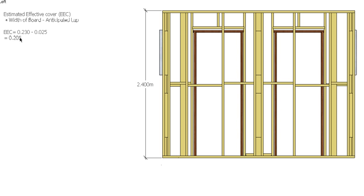So therefore my effective cover is 205mm. To work out how many boards I need in the wall, I take the height of the wall and divide that by my estimated effective cover. In this case my wall is 2.4m and my estimated effective cover is 205mm, so I need 11.707 boards. Obviously that's not really going to work — we want an even number of boards, so I'm going to round that up to 12 boards.